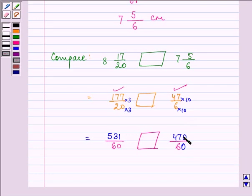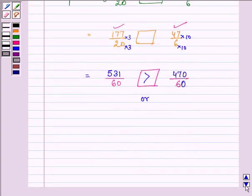So clearly we can see that 531 upon 60 is greater than 470 upon 60, or we can write that 8 and 17 by 20 is greater than 7 and 5 by 6. And in words, we can say that therefore,